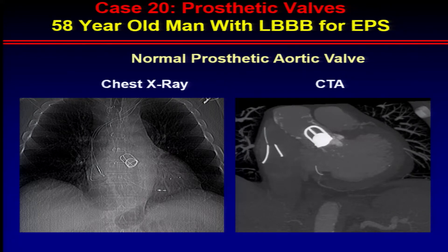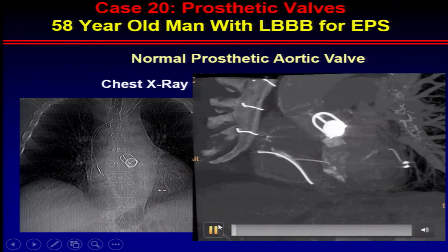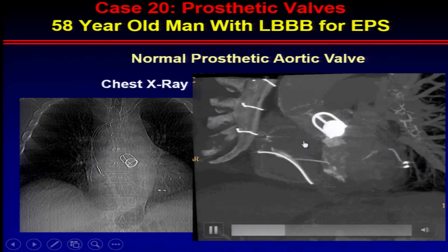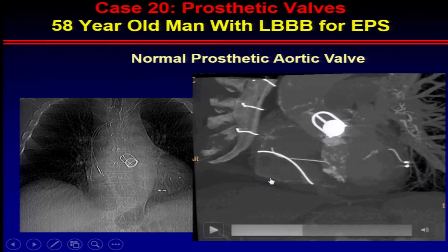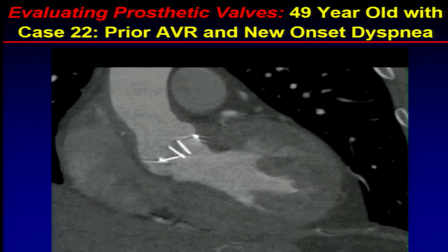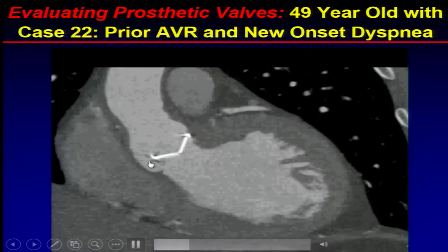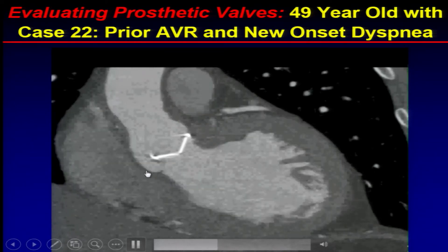Another patient had a mechanical aortic valve — you can see it's a ball and cage valve. You can see very nicely that this valve is working functionally normally. We can assess which valves are put in very nicely by CT. This is another patient who had a St. Jude valve put in, normally functioning, but with valvular dehiscence.